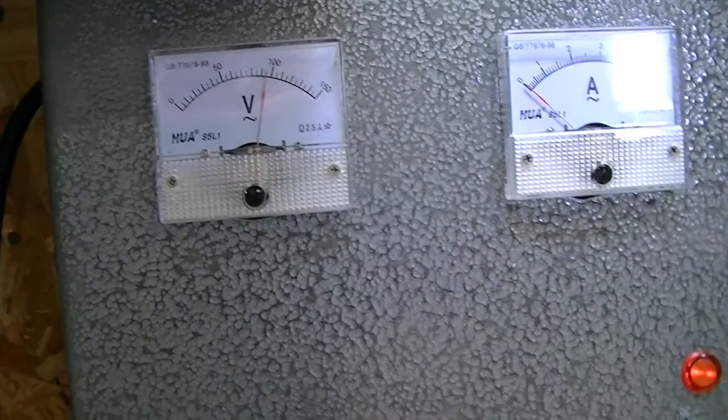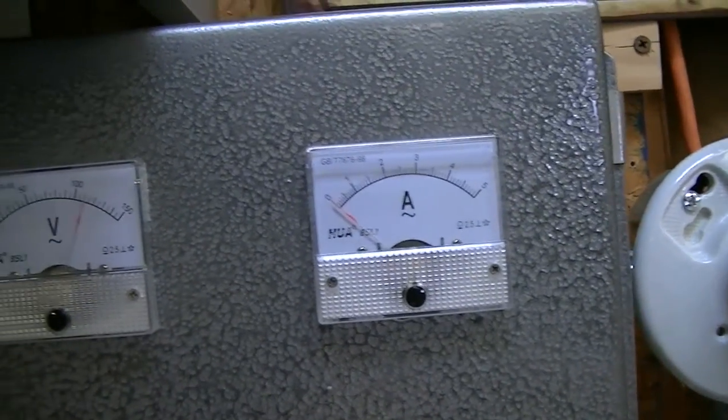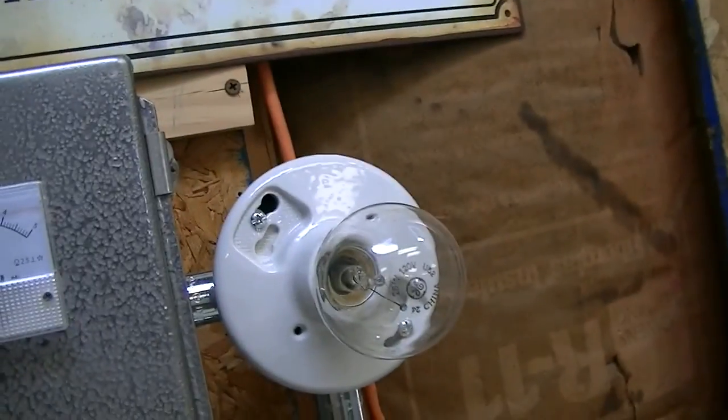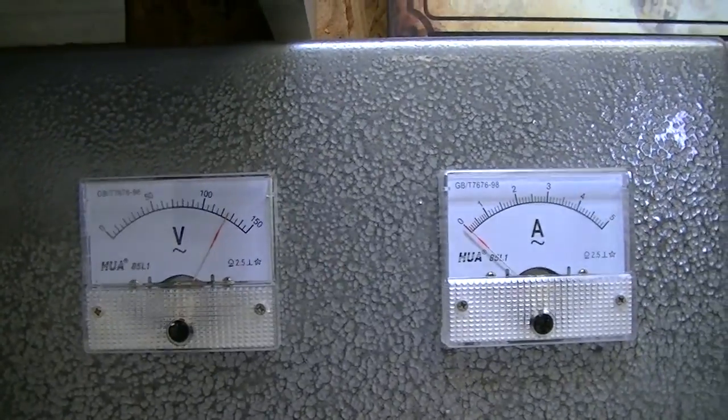Might as well just crank it right up. Again nothing on the current meter, the dim bulb is not lighting, we're up to full voltage now.